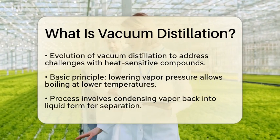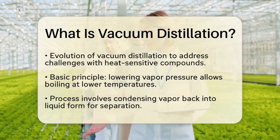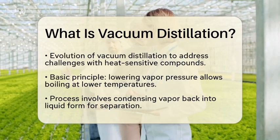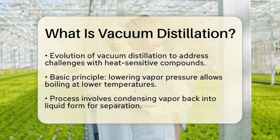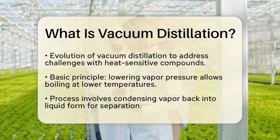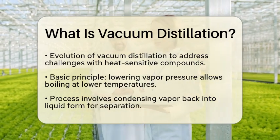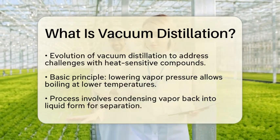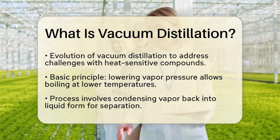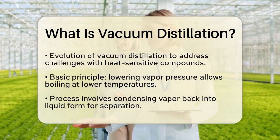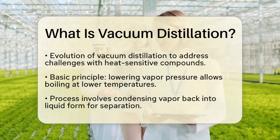Historically, distillation has been a key process in chemical engineering. It has been used for centuries to separate mixtures based on differences in boiling points. Vacuum distillation evolved as an advanced method to tackle the challenges of heat-sensitive or high-boiling compounds. By applying a vacuum, it became possible to achieve separation without excessive heat, which also saves energy.